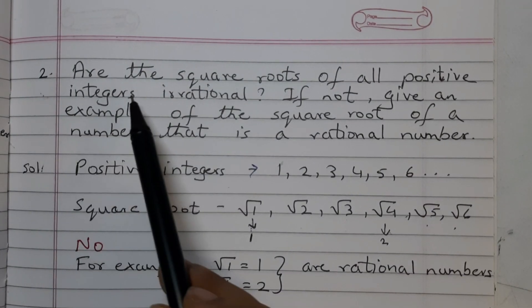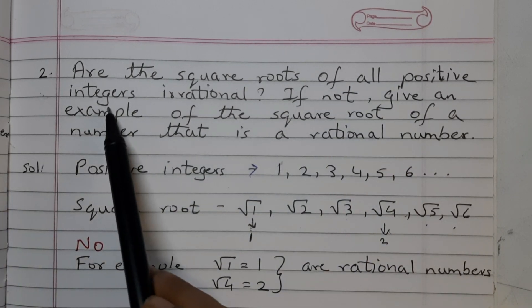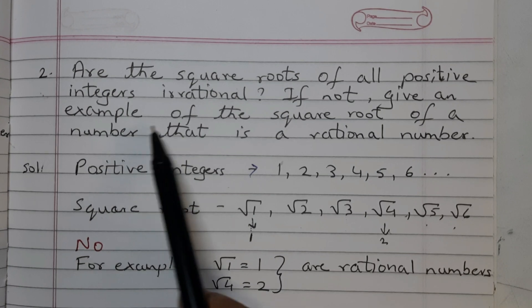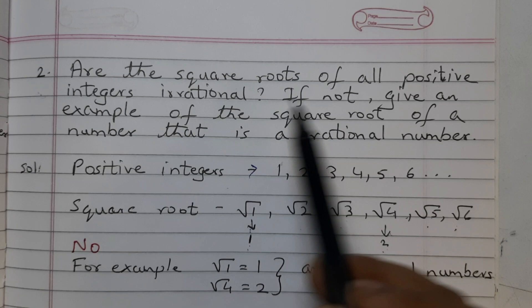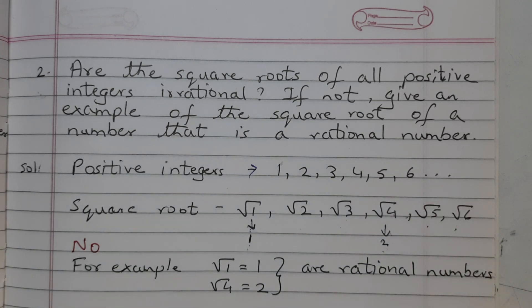Coming to question number 2. Are the square roots of all positive integers irrational? If not, give an example of the square root of a number that is a rational number. The question is asking that if you take any positive integer, is it that you will always get an irrational number?